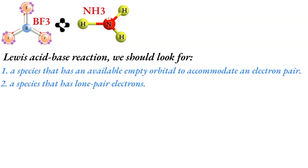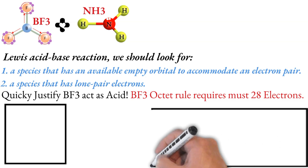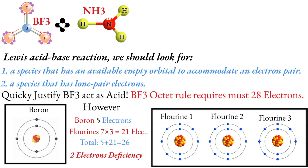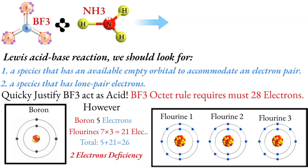A Lewis acid has an available empty orbital. For example, boron trifluoride. It has only 6 electrons in its valence shell, and it needs 2 more electrons to satisfy the octet rule. Therefore, boron trifluoride is a Lewis acid. Ammonia, on the other hand, has a lone pair of electrons, making it a Lewis base.